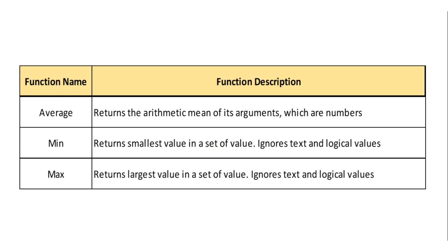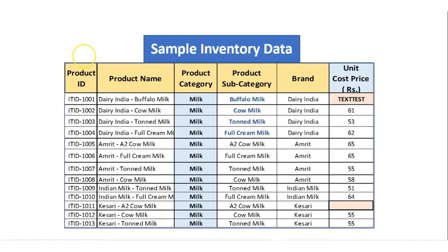AVERAGE – It returns the arithmetic mean of its arguments, which are numbers. MIN – Returns the smallest value in a set of values, ignores text and logical values. MAX – It returns the largest value in a set of values, ignores text and logical values.